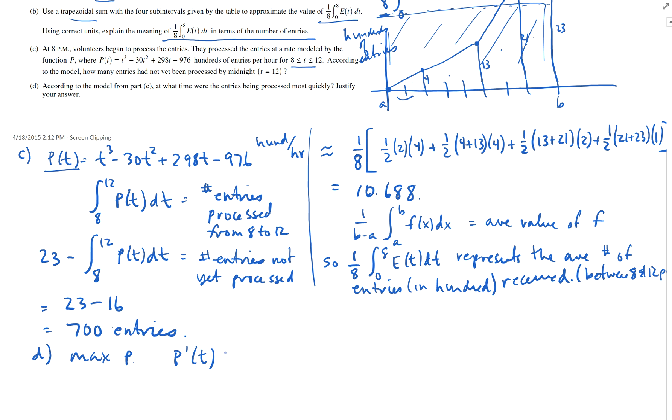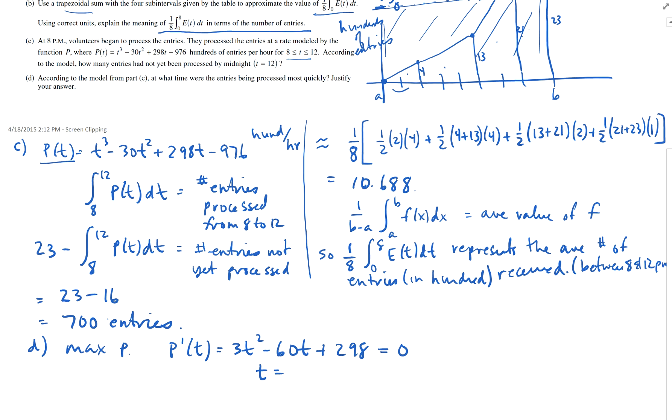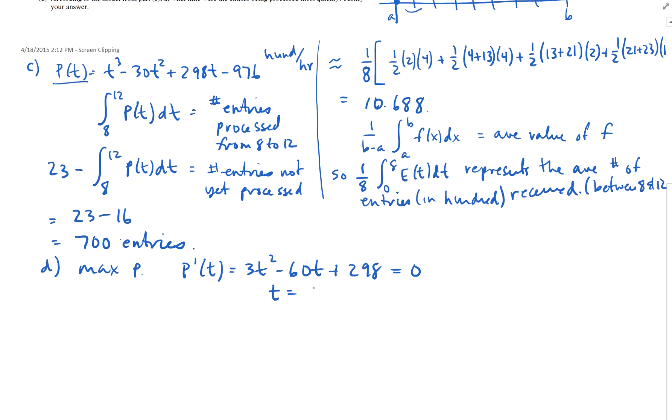Well, let's do this. P prime of T is 3T squared minus 60T plus 298. And I'm going to graph that on my calculator, set it equal to zero. And if you do that, you get two values for T. You get T is 9.183503, again, do not round. Or 10.816497. And you can actually look at your calculator and see, you'll be able to look and see if it's a max or min and that sort of thing, by looking at the derivative to see is it increasing or decreasing.